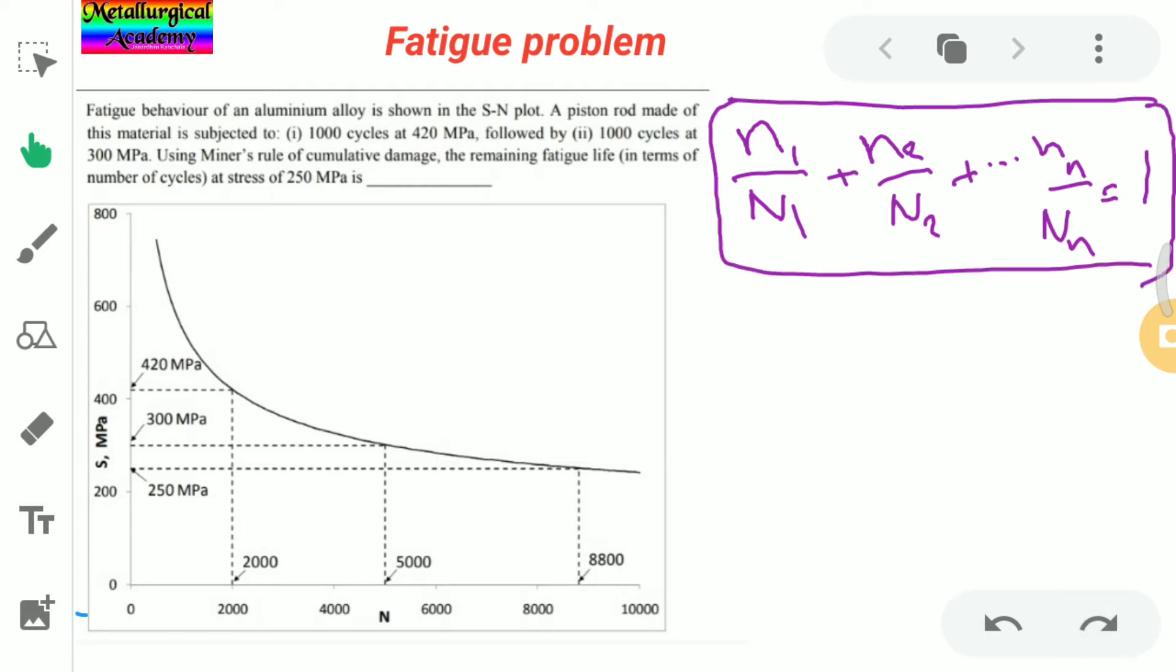The question was: the behavior of an aluminum alloy is shown in the S-N plot. The piston rod made of this material is subjected to 1000 cycles at 420 MPa. At 420 MPa we need to observe the number of cycles, which is 2000 cycles.